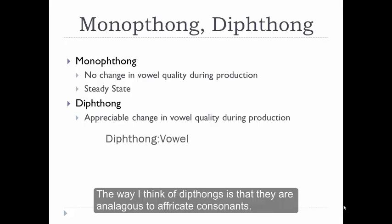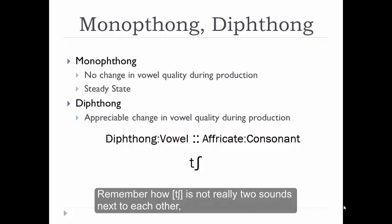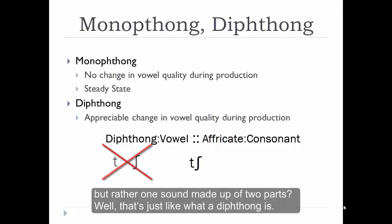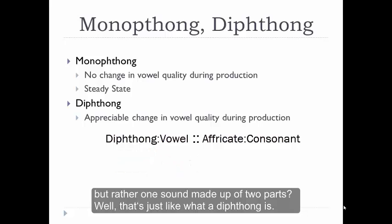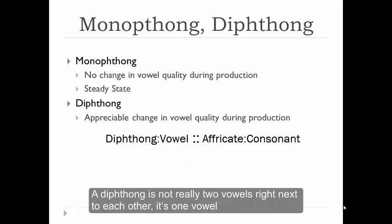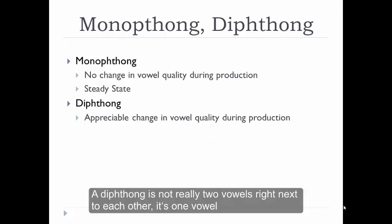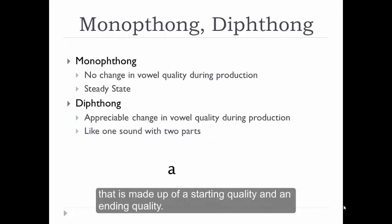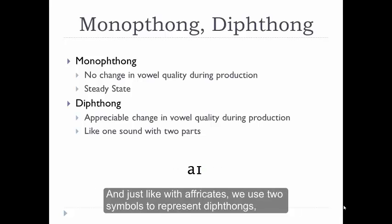The way that I think about diphthongs is that they're analogous to affricate consonants. Remember how 'ch' is not really two sounds next to each other, but rather one sound made up of two parts? Well, that's just like what a diphthong is. A diphthong isn't really two vowels right next to each other. It's one vowel that's made up of a starting quality and an ending quality.